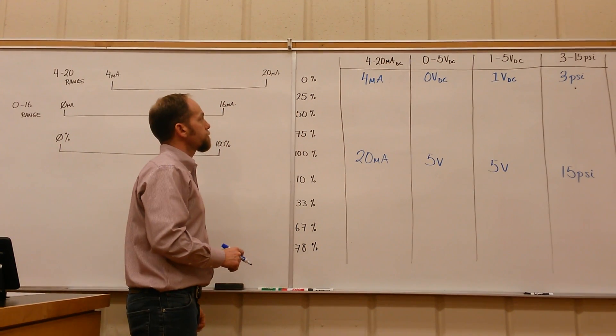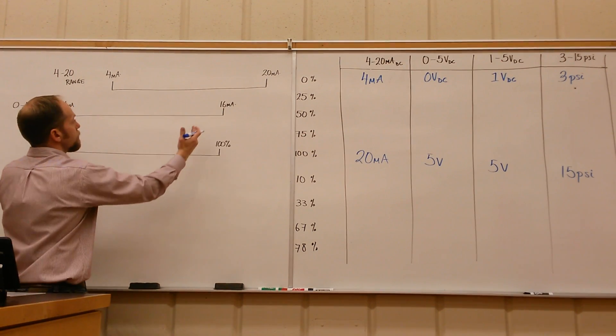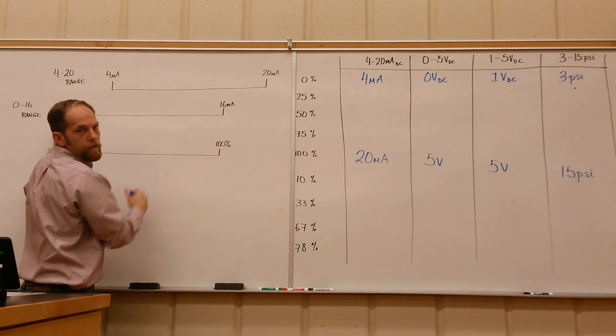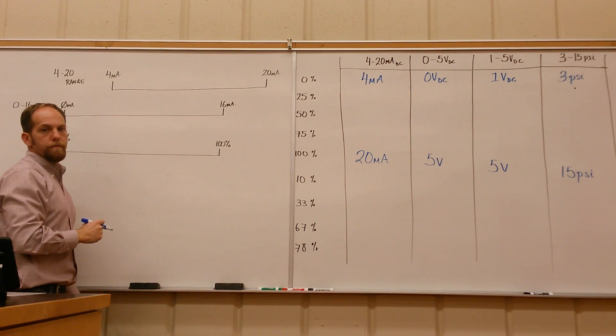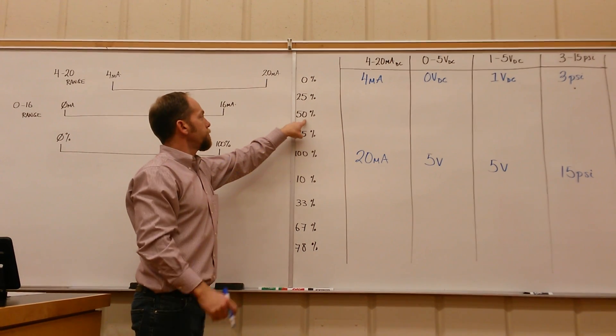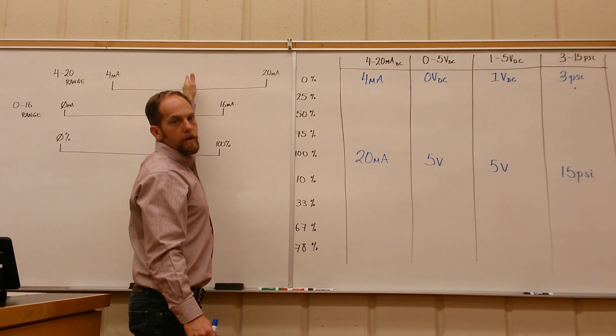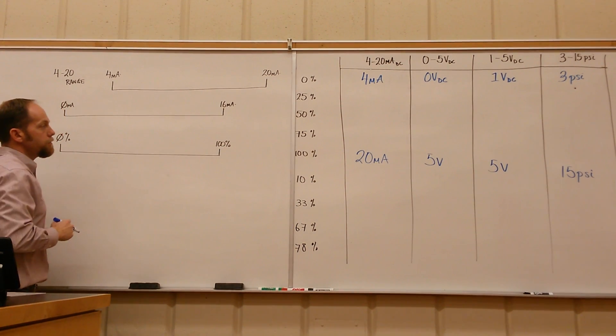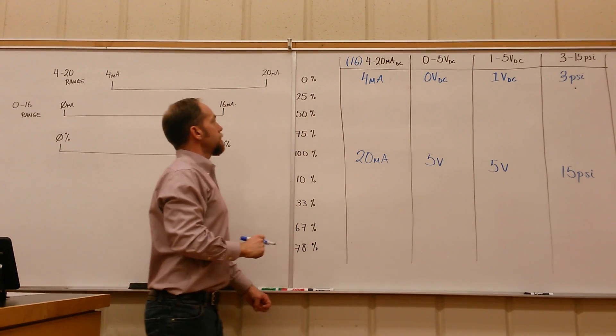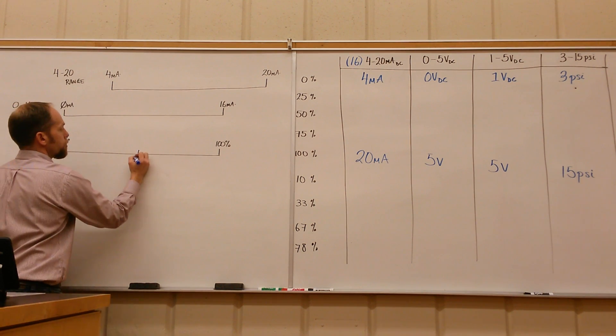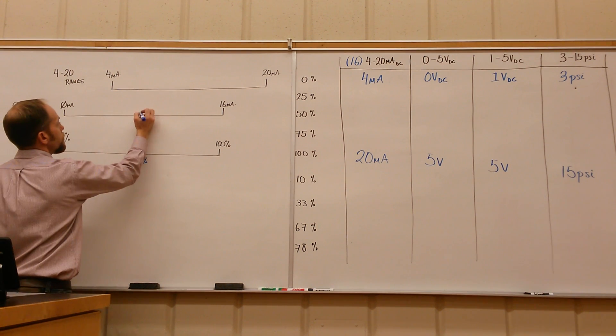The reason why they have the elevated 0 of 4 milliamps or 1 volt or 3 psi is so you can see the difference between whether you actually have power or whether you've lost power. It's a way to monitor the circuit. So we've got a 4 to 20 milliamps signal, but this 4 milliamps has been bumped up. Between 4 and 20, there's 16 equal values. They've taken the 4 to 20, but it's the same as a 0 to 16 range.